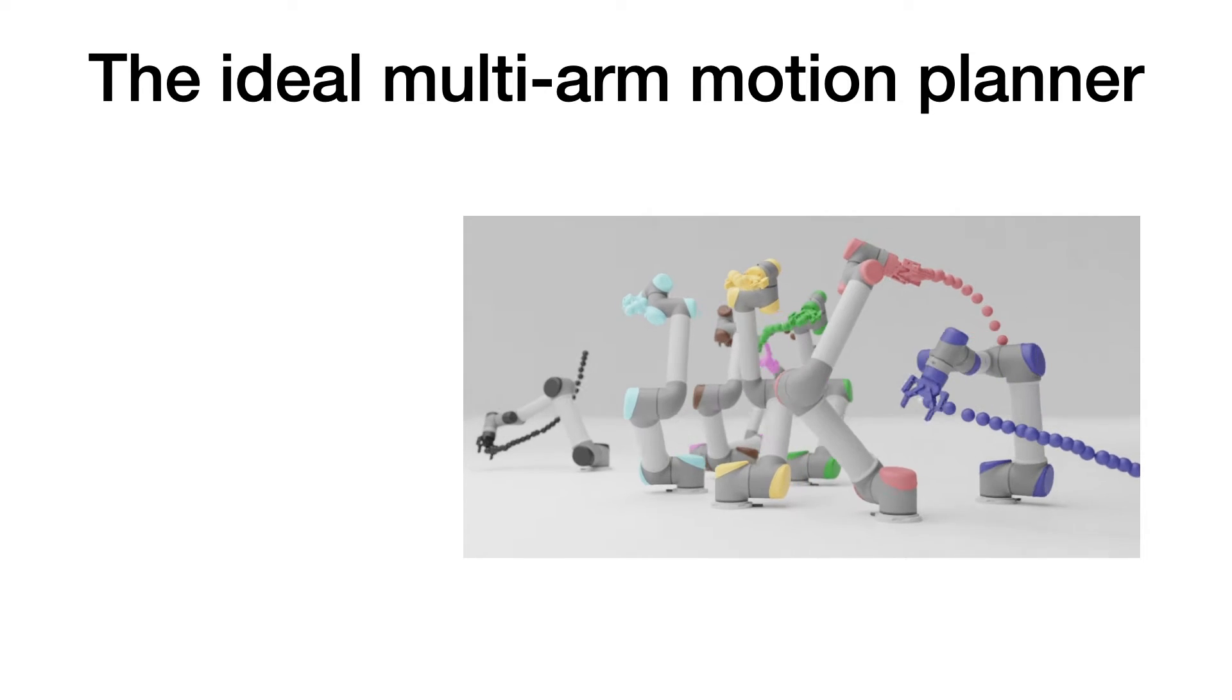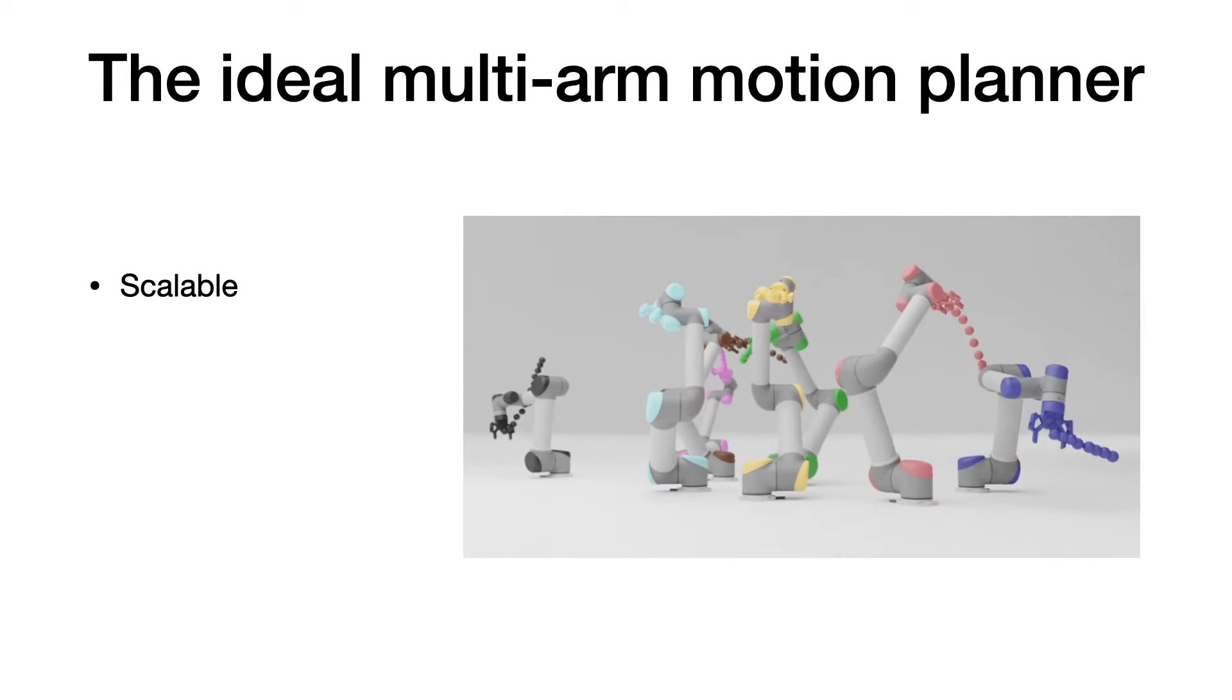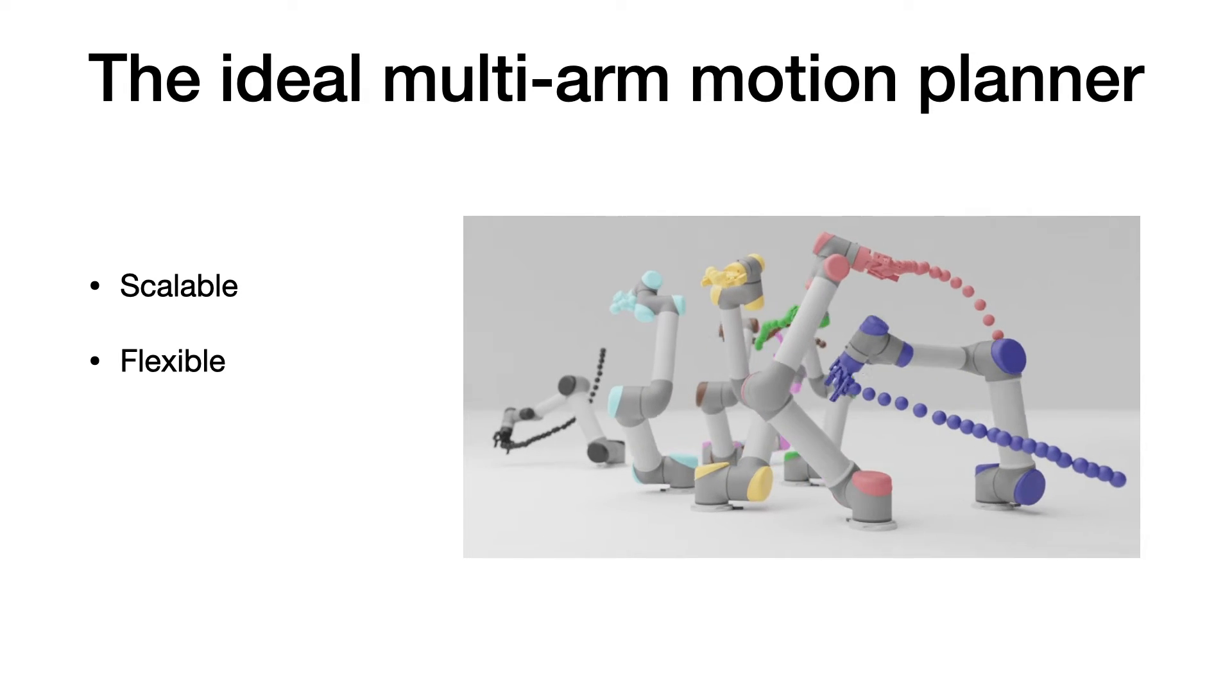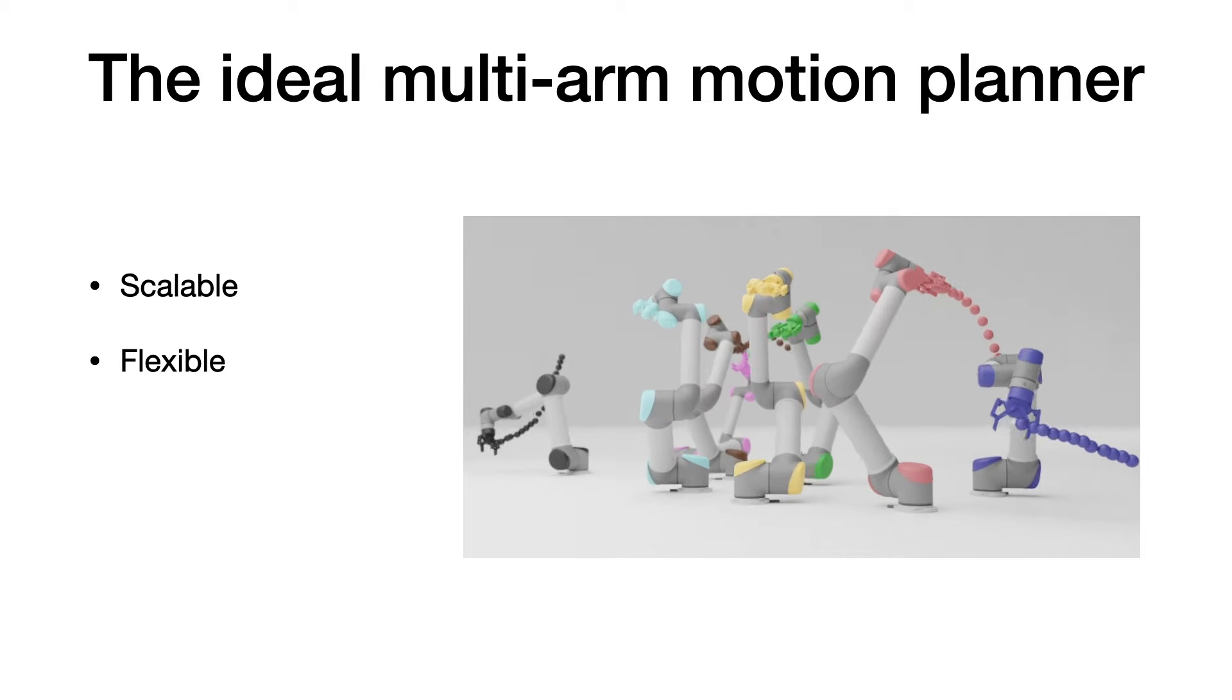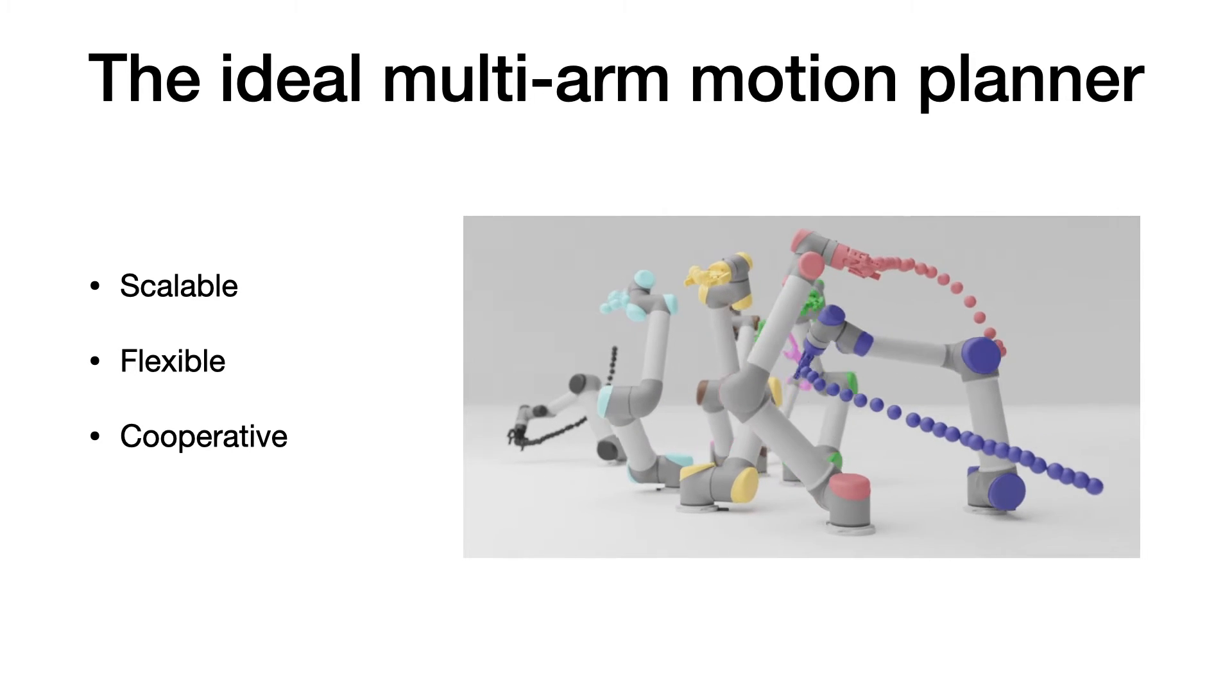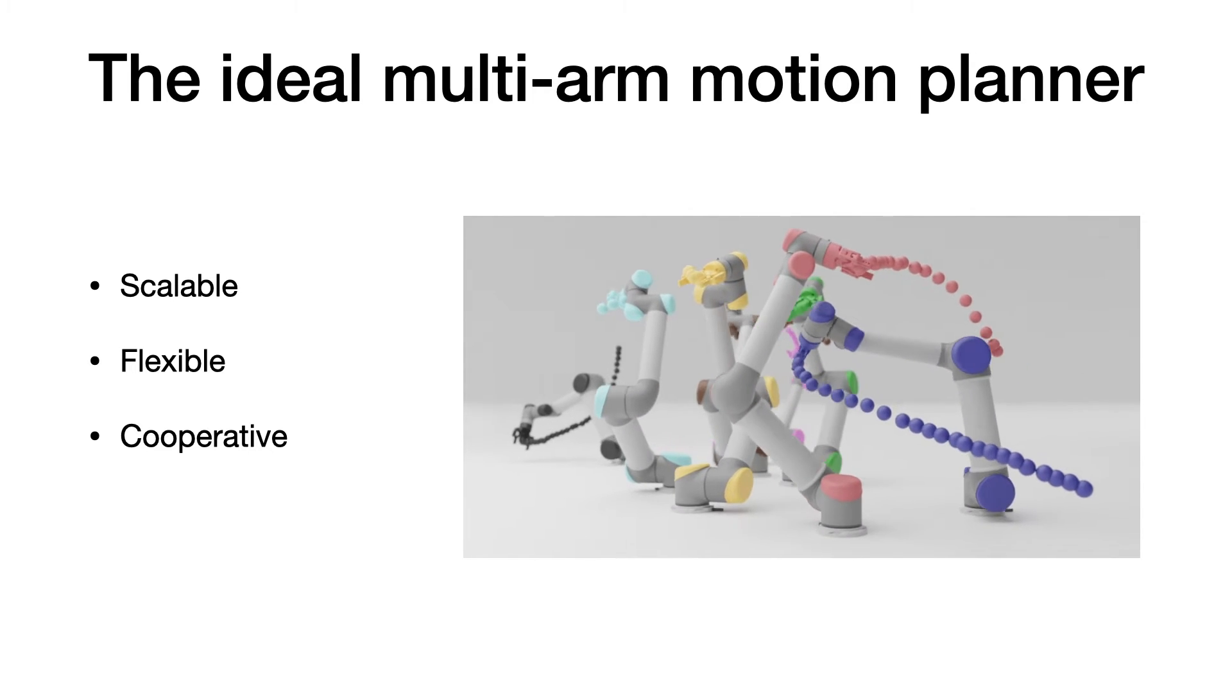A multi-arm motion planner should be scalable, in that its runtime scales efficiently with the number of arms in the system. It should be flexible, in that arms can be added to, removed from, or moved around the workspace, without an expensive retraining of neural networks. It should be cooperative, in that all arms need to reach their targets in a collision-free manner.